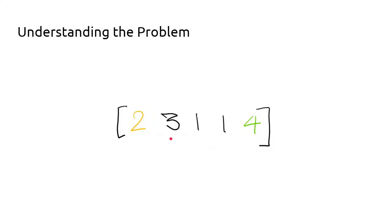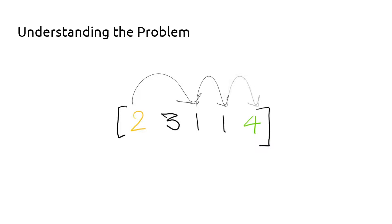Since the problem is Jump Game, you can jump around using these values. A value of two means you can jump one or two steps ahead; a value of three means you can jump one, two, or three steps ahead. Starting from index zero with value two, we jump two steps onto the value one. One lets us jump one step, and then one again — at which point we've successfully reached the end of the array and return true.